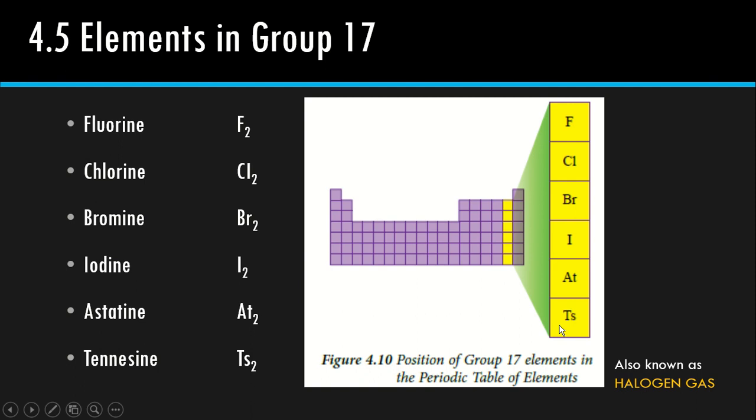Ada dua-dua-dua, macam oxygen gas O2, hydrogen gas H2. Compare dengan Group 1, tak ada formula dua-dua-dua, dia atom sahaja because dia metal. So sekarang Group 17 adalah gas.